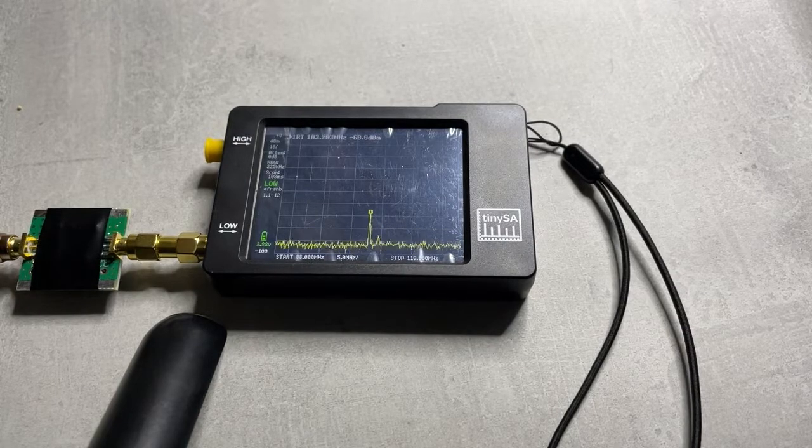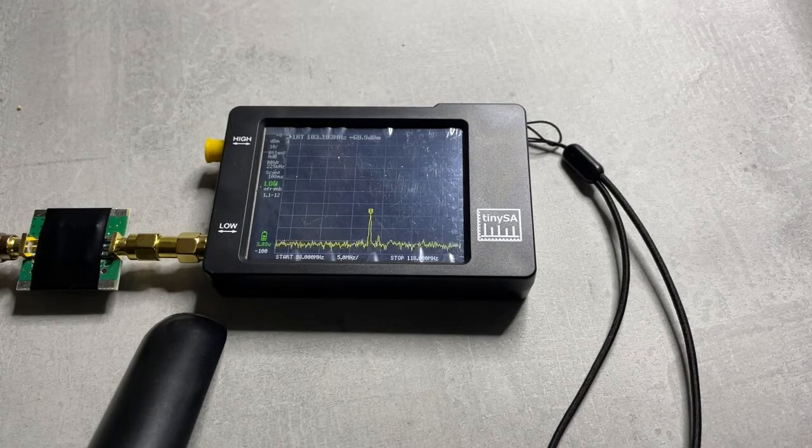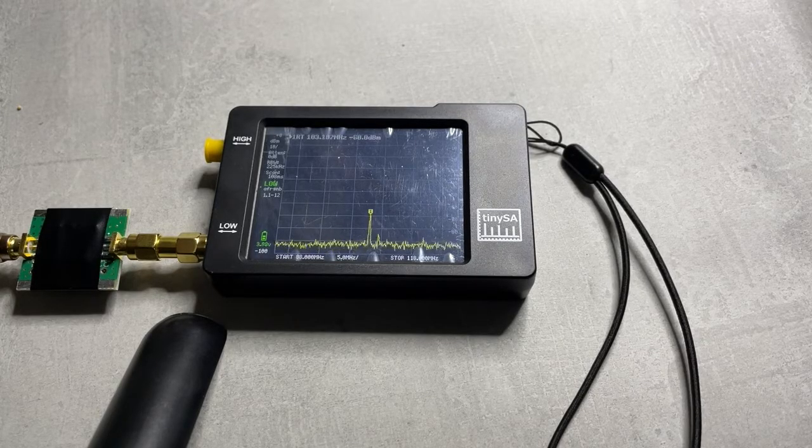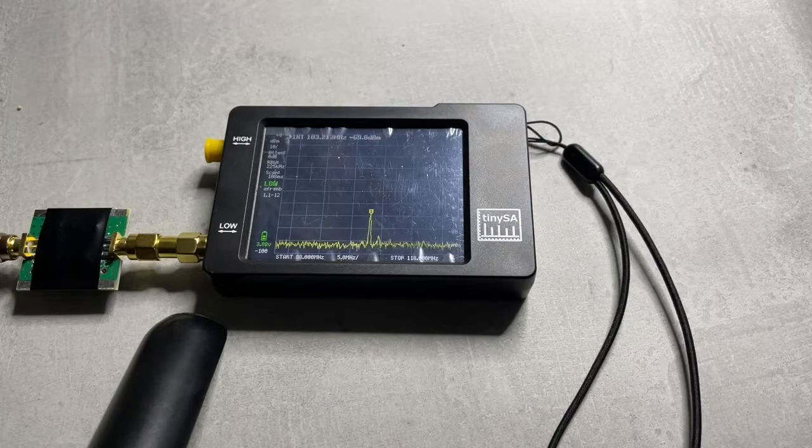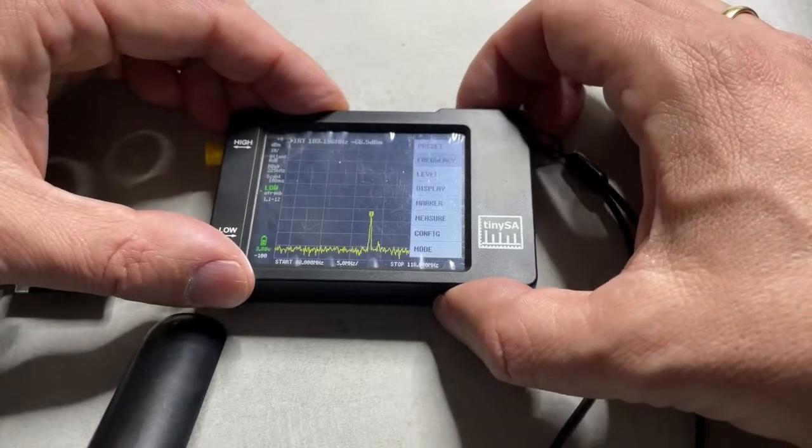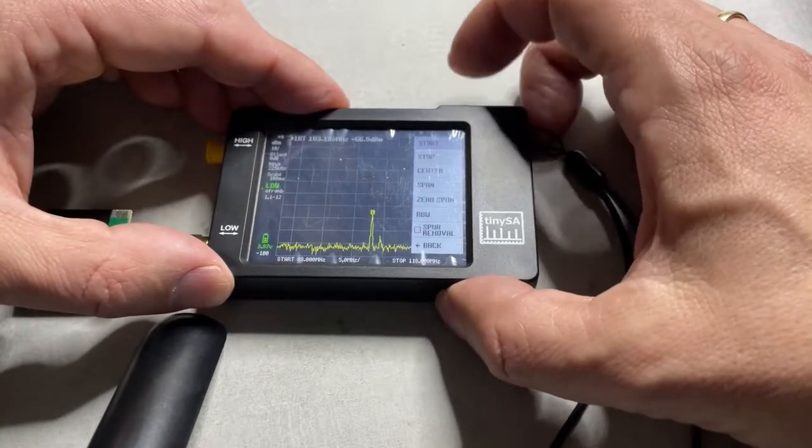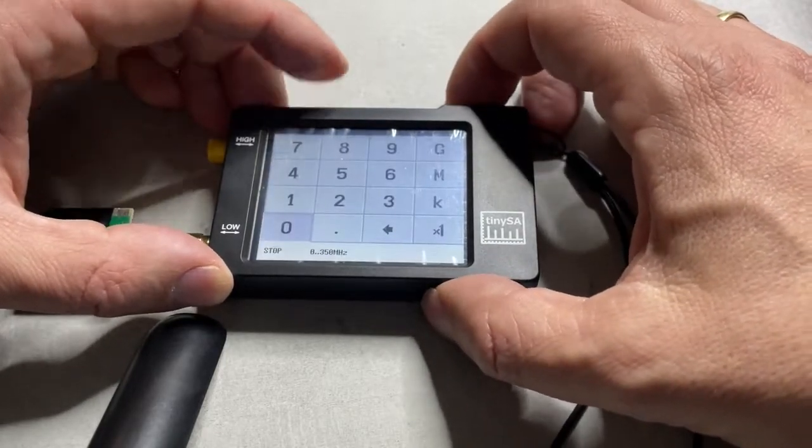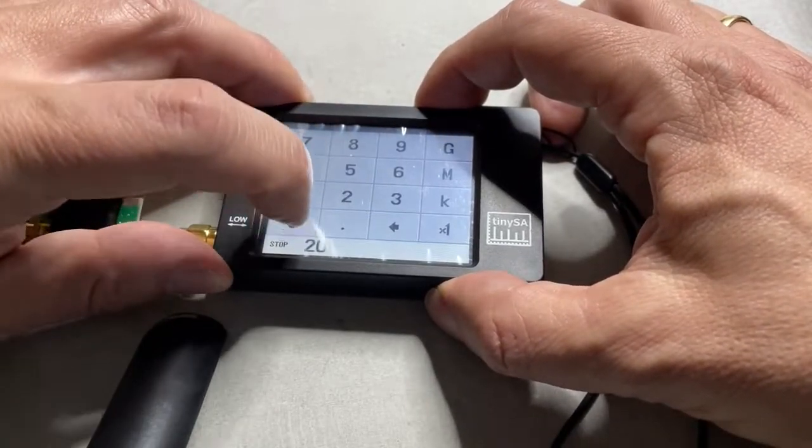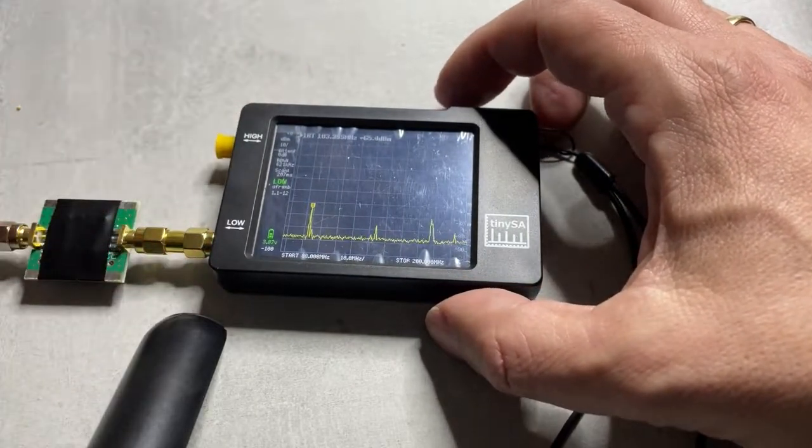Before we investigate that, let's see what that does to other out-of-band signals. I'll increase the sweep rate to 200 megahertz, so we'll include the digital audio broadcasts which we can see on the right here.